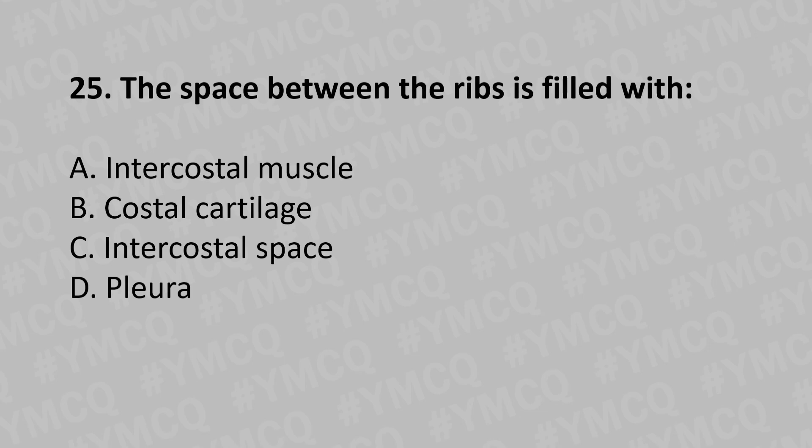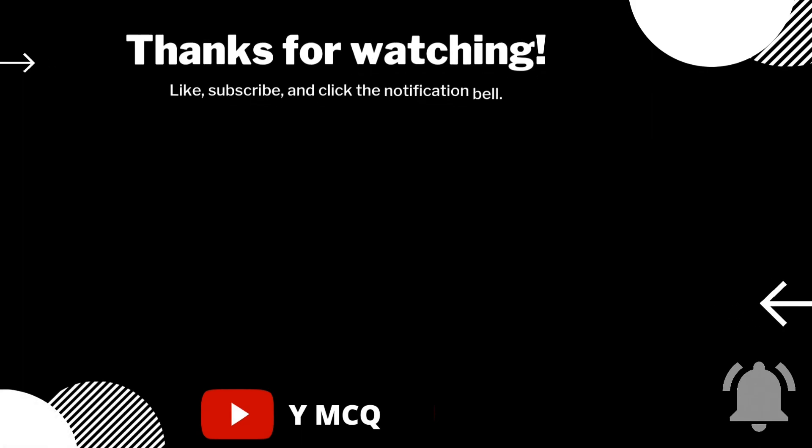Moving to our 25th question: The space between the ribs is filled with? Option A: intercostal muscle, Option B: costal cartilage, Option C: intercostal space, Option D: pleura. The answer is Option A: intercostal muscle.